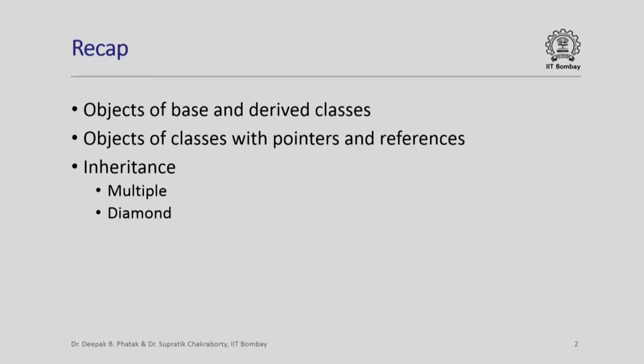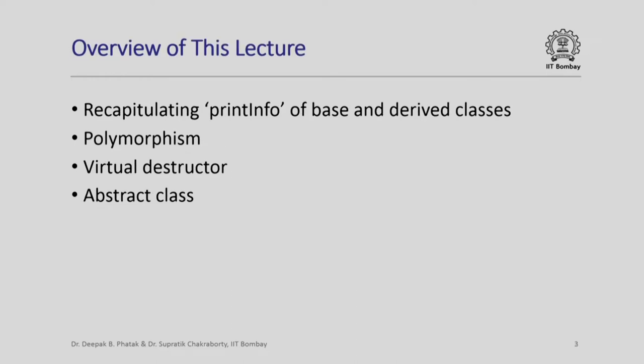Hello and welcome back. In this session, we are going to study about polymorphism and virtual functions in C++. Here is a quick recap of what we studied in the last lecture. We studied about objects of base and derived classes, pointers and references to such objects, and special kinds of inheritance like multiple inheritance and diamond inheritance. In this lecture, we will start by recapitulating the print info function from the bank account classes, and use that to motivate polymorphism. We will also study virtual destructors and abstract classes, which are particularly relevant when talking about polymorphism.